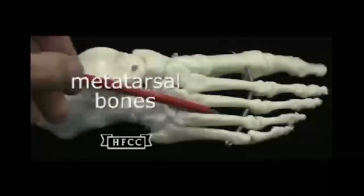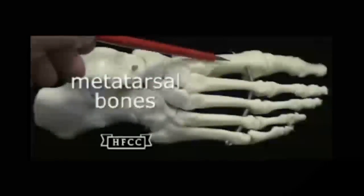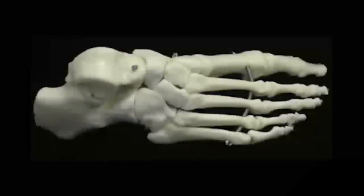These are the metatarsal bones, numbered one through five, starting there with the medial and then going toward the lateral.